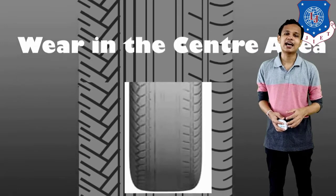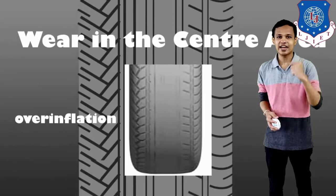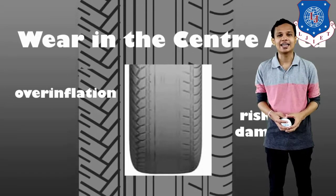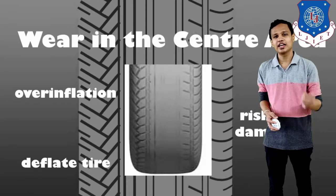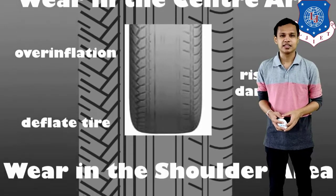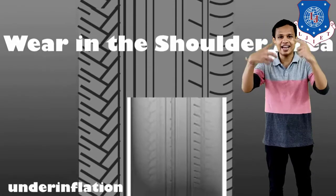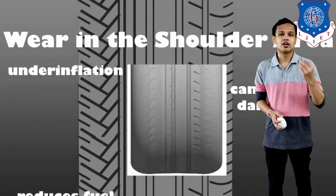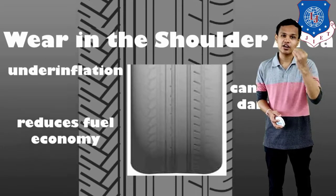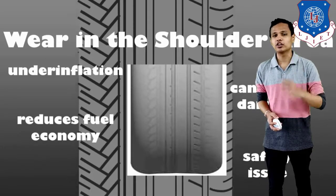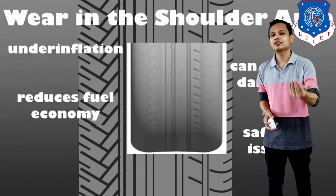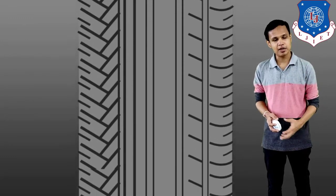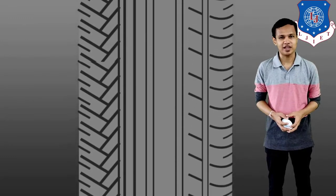If the wear is in the center area, then the tyre is being worn from the center side only, which can happen because of over-inflation of the tyre and risks damage — for that we will deflate the tyres. If the wear is in the shoulder area, which means on the side part of the tyre, that can happen because of under-inflation of the tyres, causing damage and a reduction in fuel economy. All these things can be adjusted by the simple procedure of adjusting tyre pressure or the suspension system.